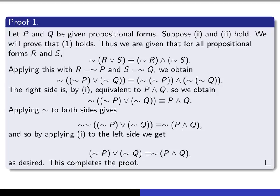The proof starts as follows. Let P and Q be given propositional forms. Suppose i and ii hold, and we will prove that 1 holds. Okay, so I'm telling the reader what I'm assuming and what it is I'm trying to prove.